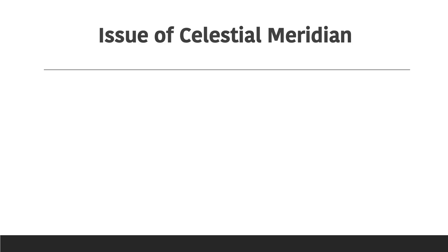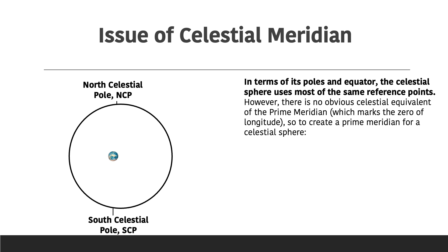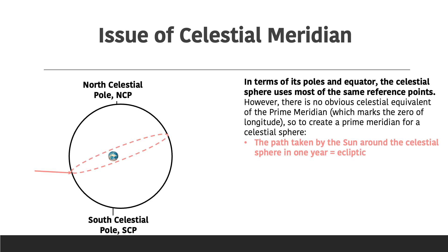In terms of the poles and the equator, the celestial sphere uses the same reference points as latitude and longitude. But there's no obvious celestial equivalent of the prime meridian — which, as a reminder, marks the zero of longitude. To create a prime meridian for the celestial sphere, we can't simply use the equivalent of the prime meridian because the earth is constantly rotating. Instead, we use a couple of different elements. The first one is the path taken by the sun around the celestial sphere in one year, and this is known as the ecliptic.